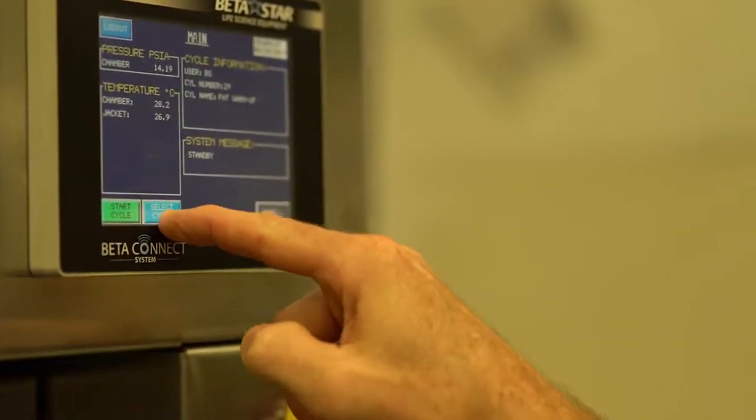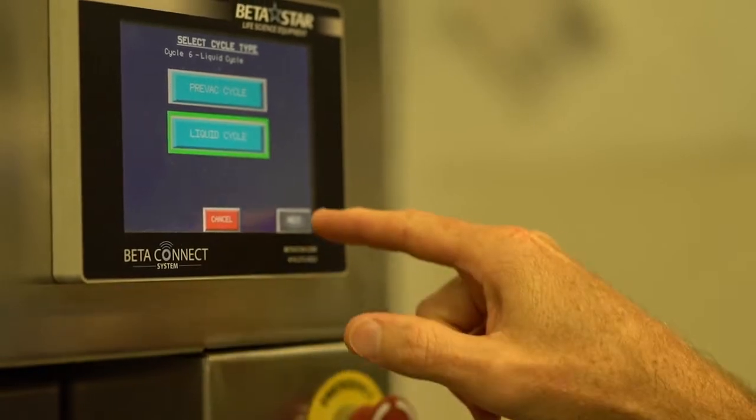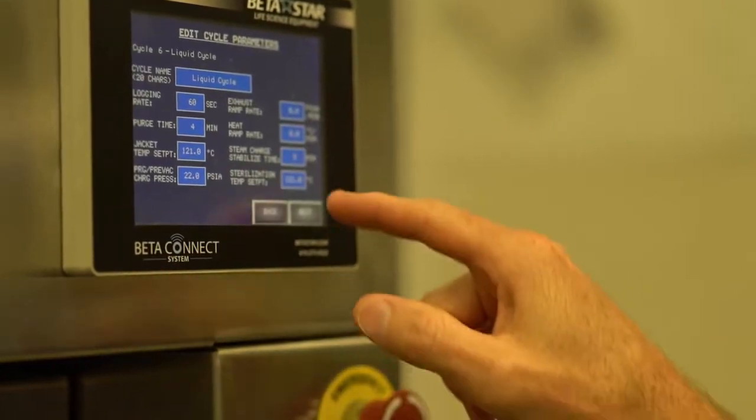Our Allen-Bradley control system, complete with remote service and support through the Beta Connect system, is easy to use and internally developed with custom cycle parameters and multi-level security.